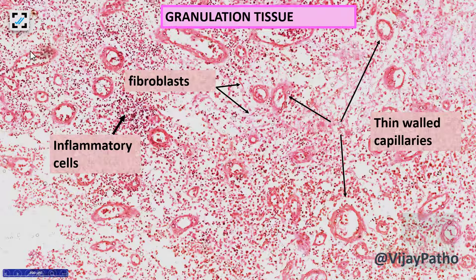In the histological picture of granulation tissue, you find thin-walled capillaries, small fibroblasts, and lots of inflammatory cells in the background. Again, the stroma is edematous.